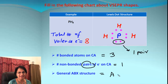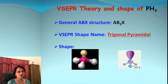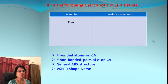For PH₃: number of bonded atoms on the central atom is three (three hydrogens). Non-bonded pairs of electrons equal one — those two electrons count as one pair. The ABX structure: A equals one, B equals three, X equals one. The formula is AB3X, giving a trigonal pyramidal shape, as shown in the 3D pictures.